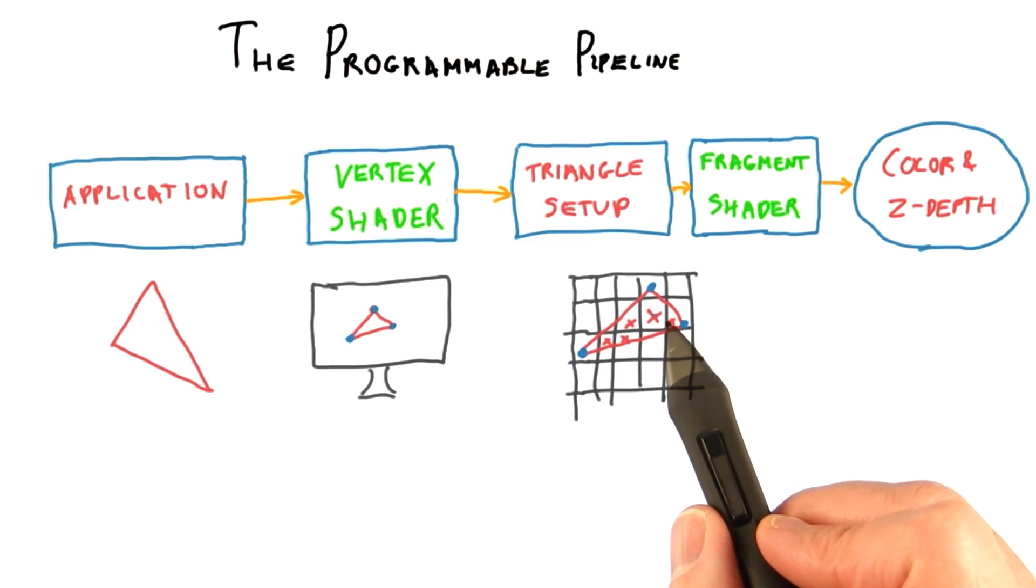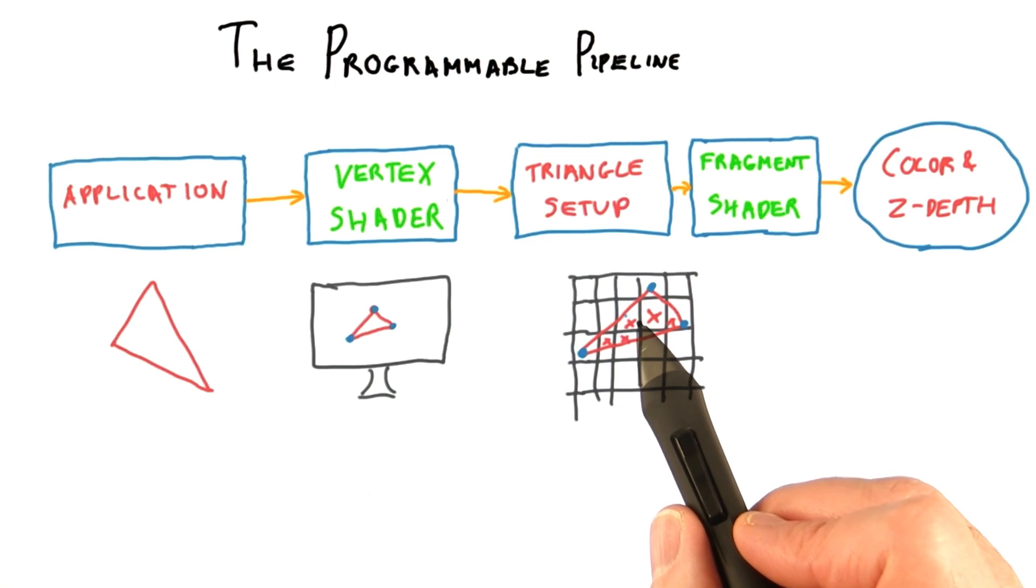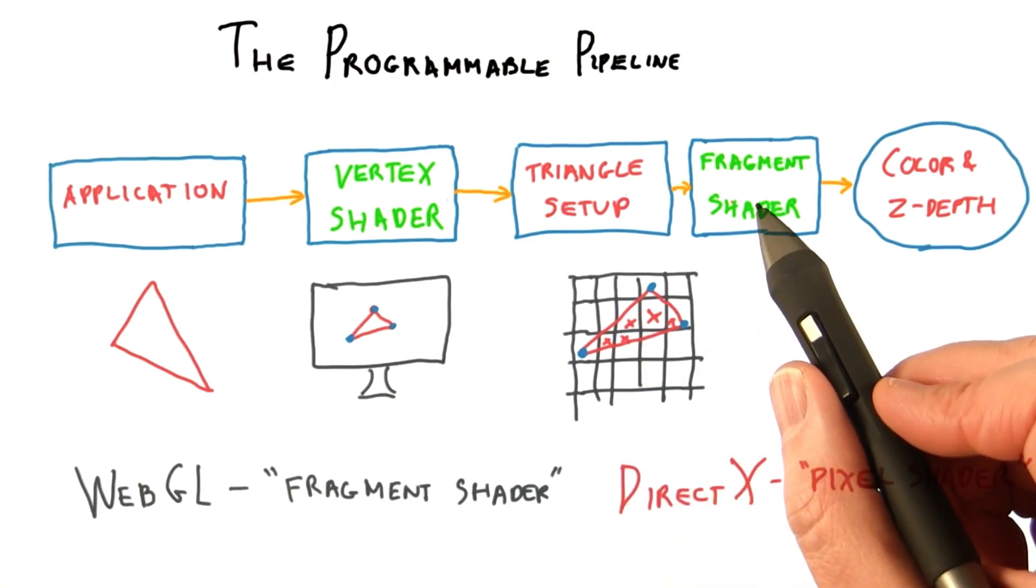Each pixel covered by part of the triangle has what is called a fragment generated for it. This process is called scan conversion. The fragments generated are sent to the fragment shader.